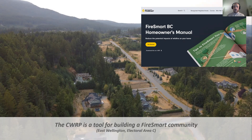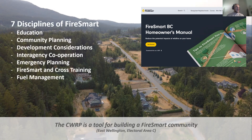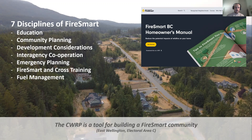The CWRP will make recommendations for the RDN to manage wildfire risk in each electoral area. The recommendations will follow the seven disciplines of FireSmart: education, community planning, development considerations, and the like. I've pulled out some high-level ideas we're considering for the plans in your area, split roughly into education, community planning and development, emergency response, and fuel management topics. Most of these actions are eligible for additional money from the province if they're supported by these plans.